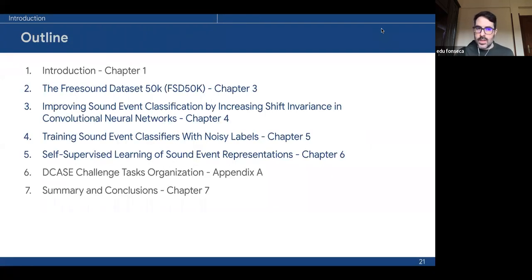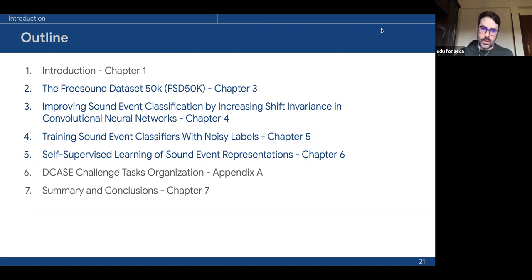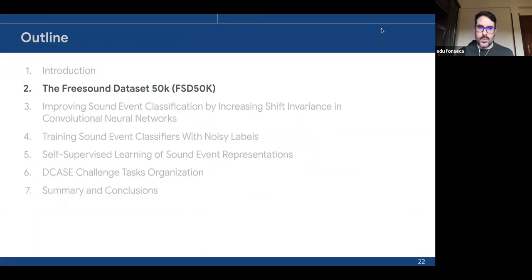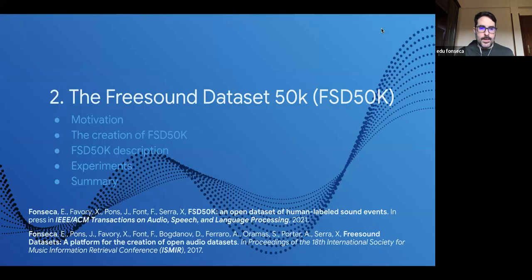This is the outline of this presentation, along with the corresponding chapters of the thesis. After this introduction, we'll see four sections corresponding to the main four objectives. We'll then briefly mention our work on DCASE challenge organization and the summary and conclusions. Let's get started with the FreeSound Dataset 50K—I'll sometimes refer to it as FSD for simplicity. This content has been published in Transactions on Audio, Speech, and Language Processing, and an ISMIR paper.